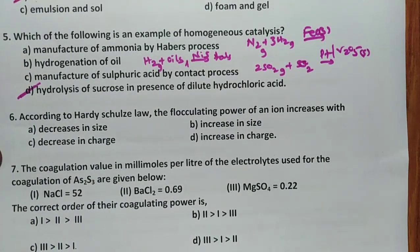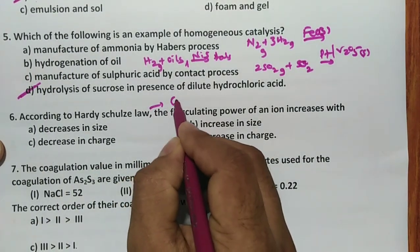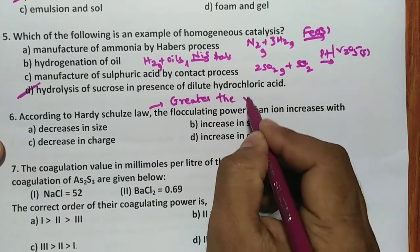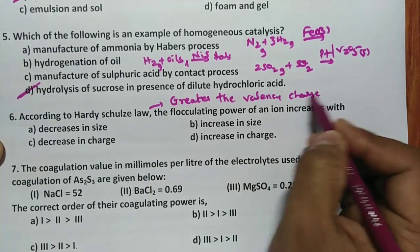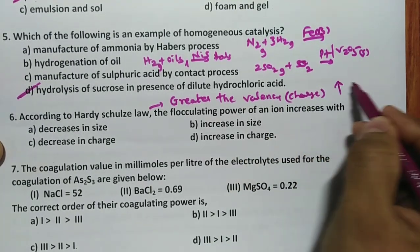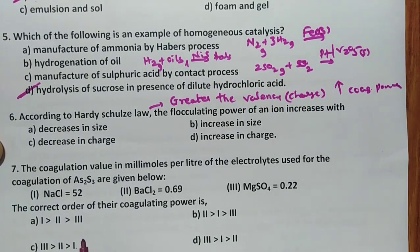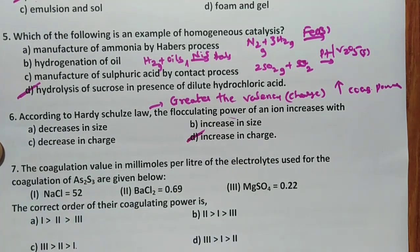According to Hardy-Schulze rule, the flocculation power of an ion increases - what it will explain? It will explain that greater the valency or you can say charge, greater is its coagulating power. Hence, definitely increase in charge should be the answer. Here, size factor we will never consider, charge factor we consider.